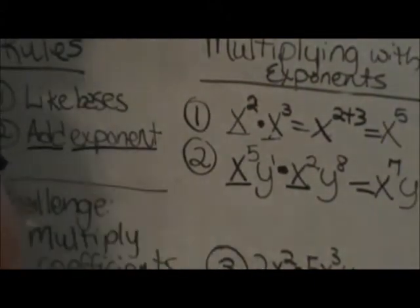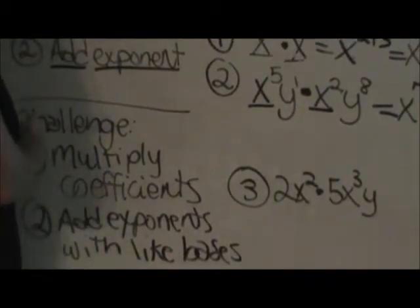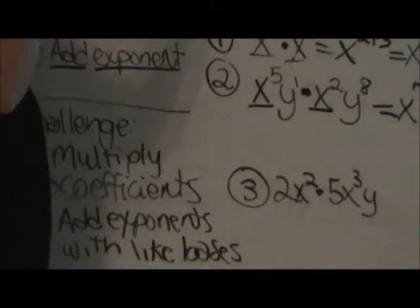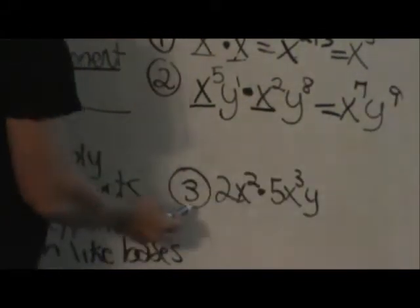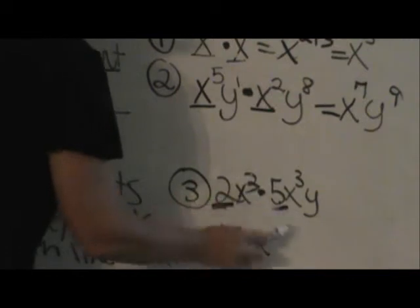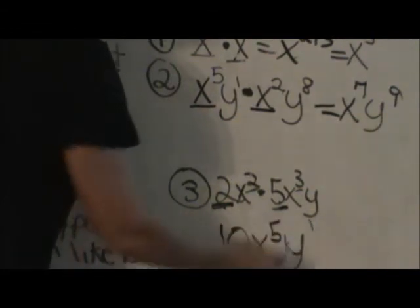Now let's look at a quick challenge problem. What do you do when you have coefficients and exponents? The rules are you're going to multiply the coefficients, just like the rule says — we're multiplying. But then we're going to add the exponents, because exponents take a step lower than the coefficients. So let's look at our example: 2x squared times 5x cubed y. I'm going to take the coefficient of 2 and the coefficient of 5 and multiply those together — 2 times 5 is 10. Then using the rules of exponents, x squared times x cubed is x to the fifth. And then we have a y by itself — we're not multiplying by another y, so it just stays y to the first. So the answer is 10x to the fifth, y to the first.